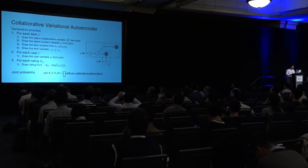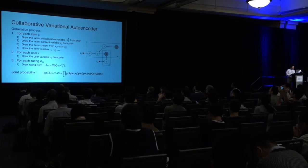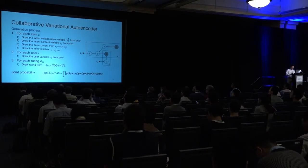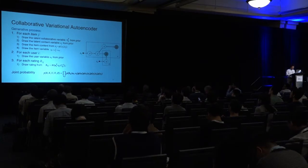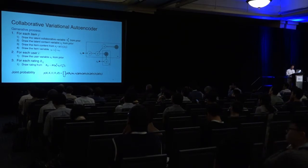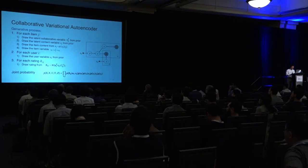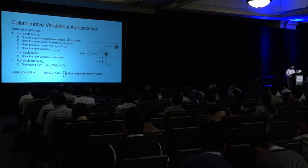The overall generative process is as follows. For each item, we draw a latent collaborative variable V† from the prior and a content variable Z from the prior. Then we draw content X from conditional distribution P(X|Z). We compose the item variable V by summing up the collaborative variable V† and Z. For each user, we draw user variable U from the prior. With the item variable and user variable available, we draw the rating from a normal distribution with mean being the dot product of the two. Following this generative process, the joint probability distribution can be written as shown.